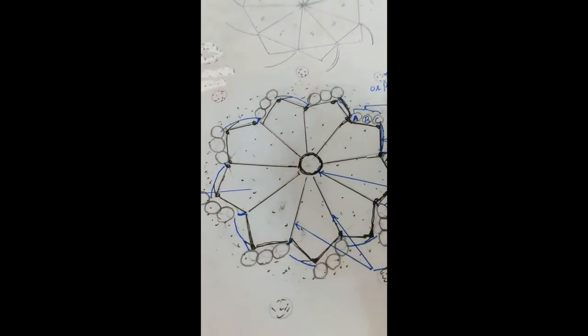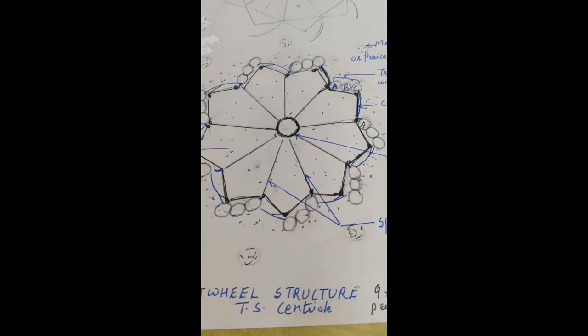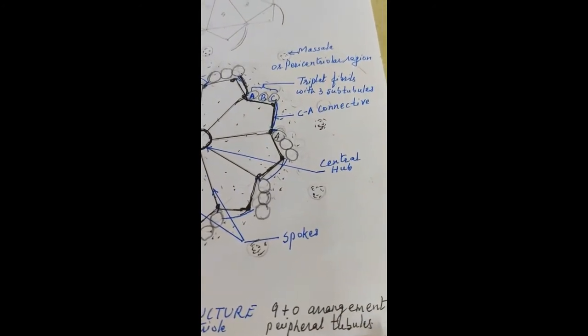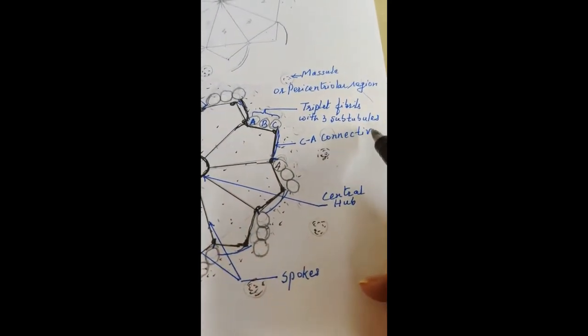So now this whole structure looks like a cartwheel. Cartwheel with 9 plus 0 arrangement of peripheral tubules. Each tubule is made up of a triplet.